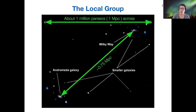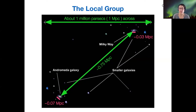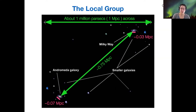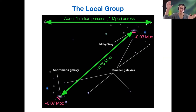When you compare that to the sizes of the galaxies themselves — and these are drawn to scale — you can see that the distances between galaxies are quite a bit larger than the size of the galaxies themselves. I would say about 10 times larger distance between galaxies than the diameter of the galaxies themselves.